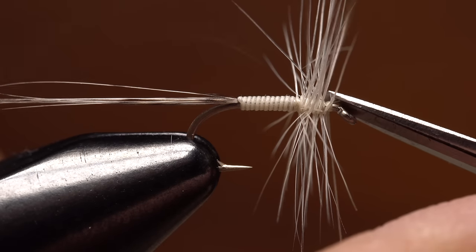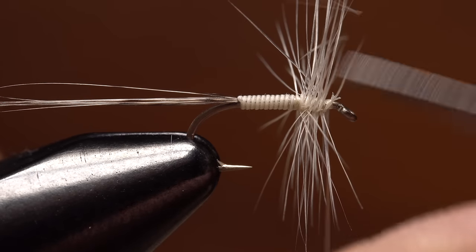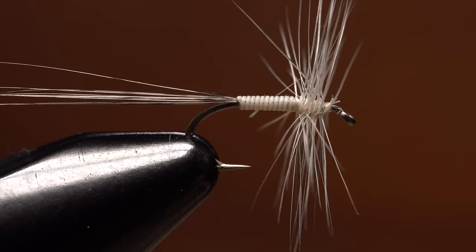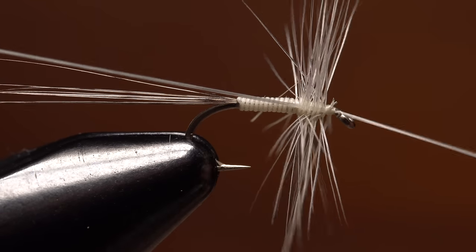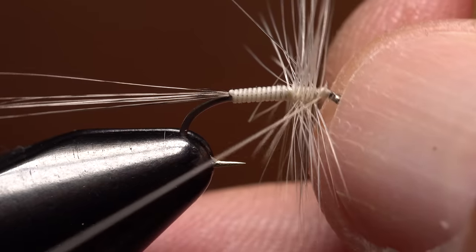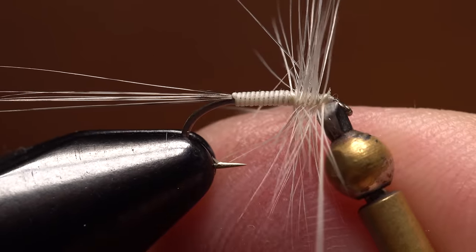If there are any wonky fibers left, now is a really good time to snip them out. Once things are looking tidy, do a four or five turn whip finish, trying your best not to trap hackle fibers in the process. Seat the knot well and then snip or cut your tying thread free.